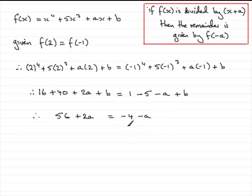So if I add a to both sides, we're going to get 3a. And if I take 56 from both sides, we've got minus 4 minus 56 which is minus 60. So all I need to do is divide both sides by 3 and you've got a equals minus 20.